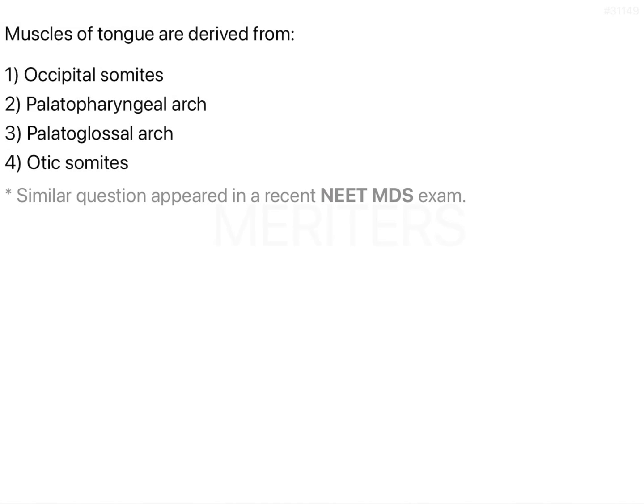Muscles of the tongue are derived from occipital somites. The development of the tongue occurs from four pharyngeal arches — the first, second, third, and fourth pharyngeal arches all contribute to the development of the tongue.